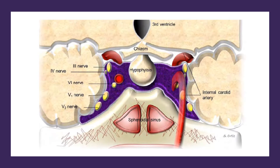The relations of the pituitary gland are as follows. Superiorly, it is related to the optic chiasma, the floor of the third ventricle, and the diaphragma sellae. Inferiorly, it is related to the sphenoid air sinus. On either side, it is related to the oculomotor nerve (third cranial nerve), the trochlear nerve (fourth), the abducens nerve, the ophthalmic and maxillary divisions of the trigeminal nerve, and the internal carotid artery.